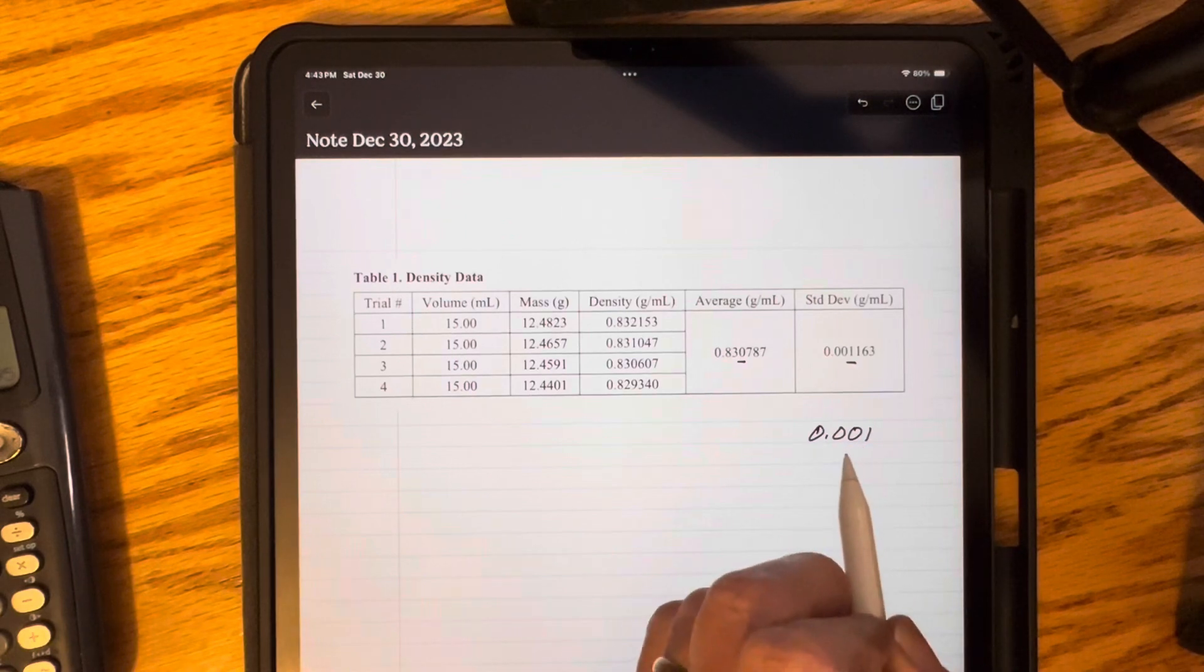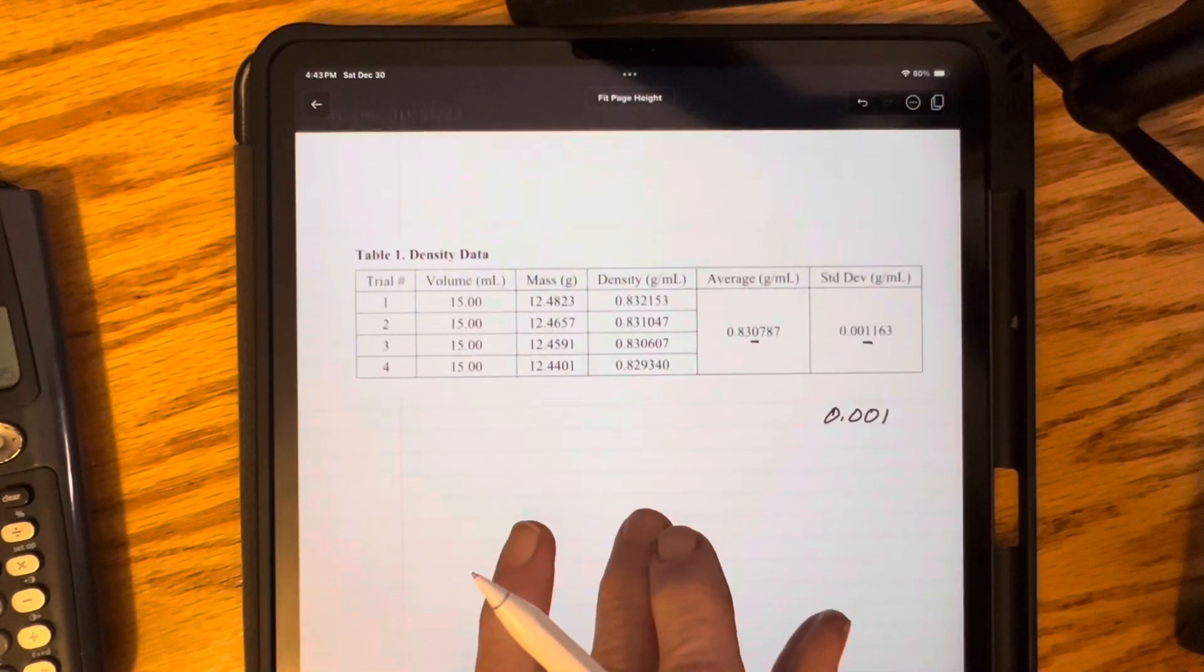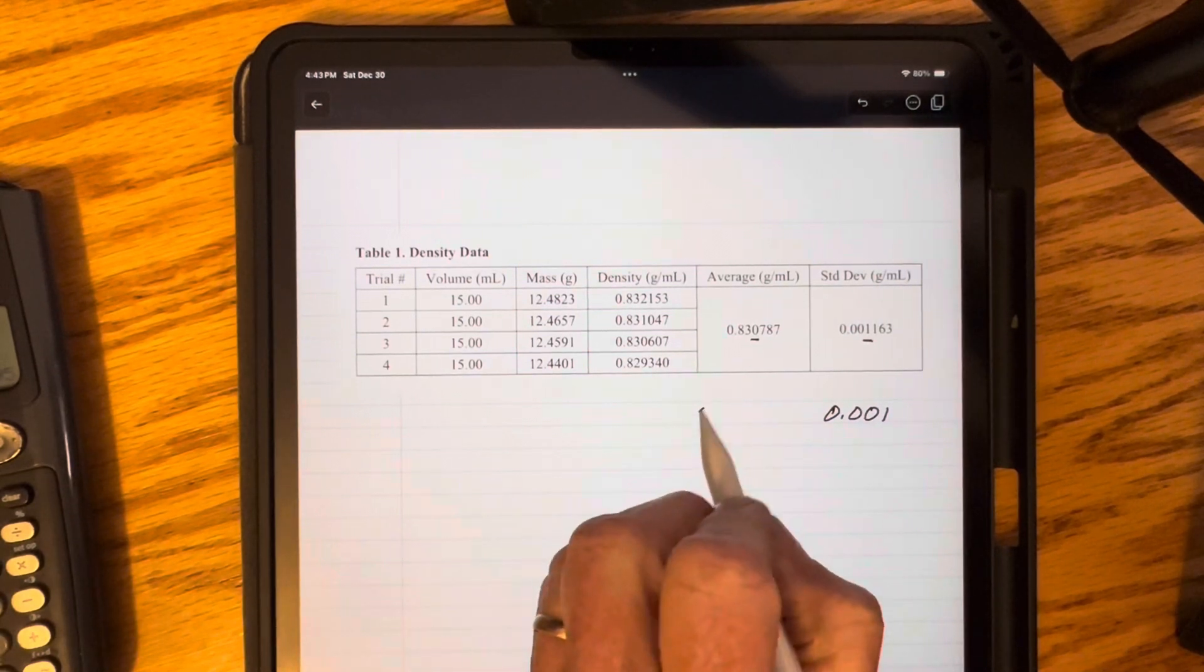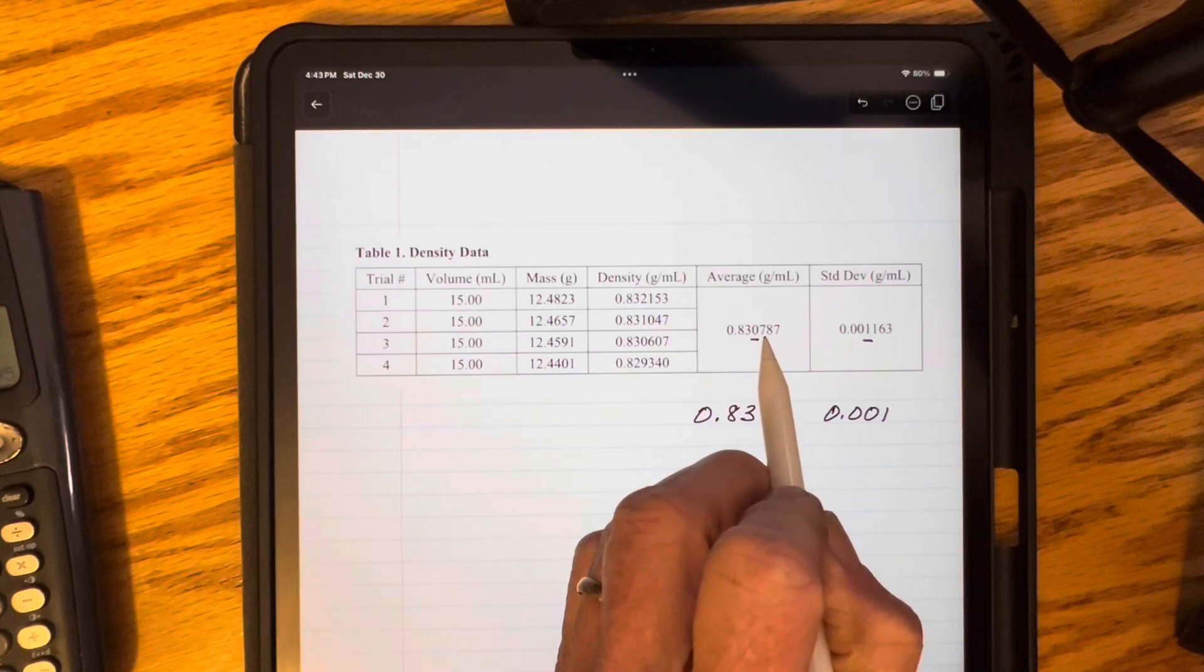So because my rounded standard deviation has three decimal places, then I'm going to round my average also to three decimal places.